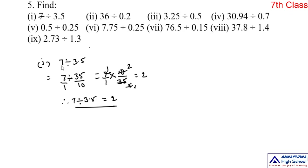Did you understand? Whole number divided by a decimal number — first you convert the decimal number into a fraction number, then convert into multiplication. To divide any number by a fraction, multiply the first number by the reciprocal of the second fraction. Here the first number is 7. 7 into the reciprocal of 35 by 10, which is 10 by 35. After simplification, this is 2. You can do the second one as homework. Now let me do the third one.